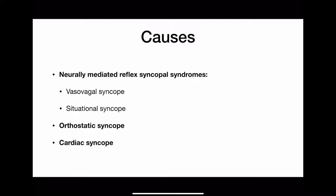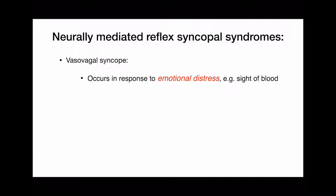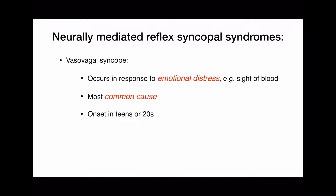The causes of syncope include neurally mediated reflex syncopal syndromes — that is vasovagal syncope and situational syncope — as well as orthostatic and cardiac syncope. In neurally mediated reflex syncope, the body reacts to triggers such as the sight of blood, prolonged standing, hot environment, or extreme emotional distress. These stimuli trigger autonomic reflexes causing heart rate and blood pressure to drop, reducing blood flow to the brain and resulting in loss of consciousness. Vasovagal syncope is the most common cause and is more common in teens and twenties.